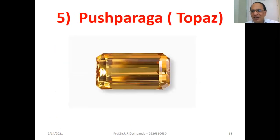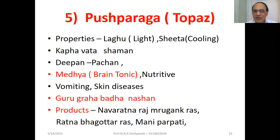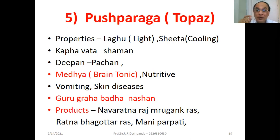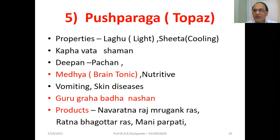Fifth Ratna: Pushkaraj (Topaz). Properties: Lagu (light) and Shita (cooling). Kapha-Vata-Shamana. Deepan and Pachan — increases appetite. Medhya (brain tonic) and nutritive. Used in vomiting with hyperacidity and skin diseases due to Pitta and Rakta problems. Astrologically, Guru-Graha-Badha-Nashana — if Jupiter is defective in the astrological chart, use Pushkaraj. Products: Navaratna-Raja-Mrugang-Karas, Ratna-Bhagotra-Ras, and Mani-Parpati.